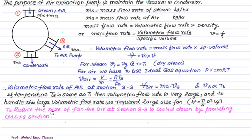And to handle this large volumetric flow rate, we require large size of fan, because volumetric flow rate is defined as the cross sectional area of pi by 4 D square multiplied by flow velocity. To reduce the size of the fan, the air at section 3-3 is cooled down by providing the cooling section.